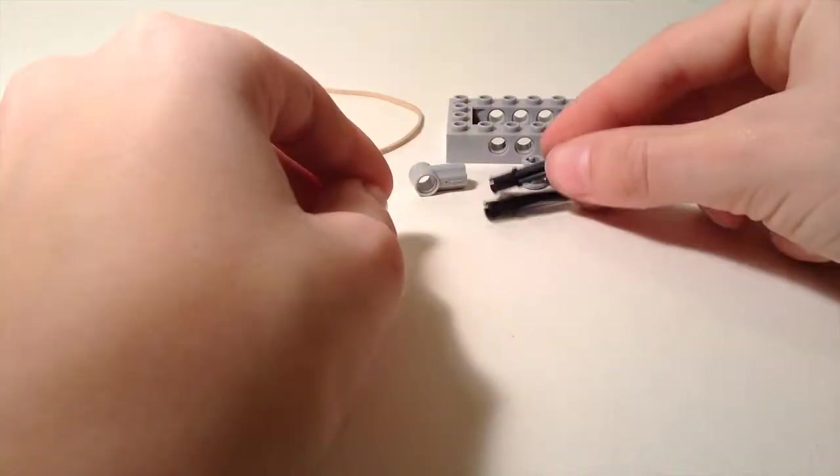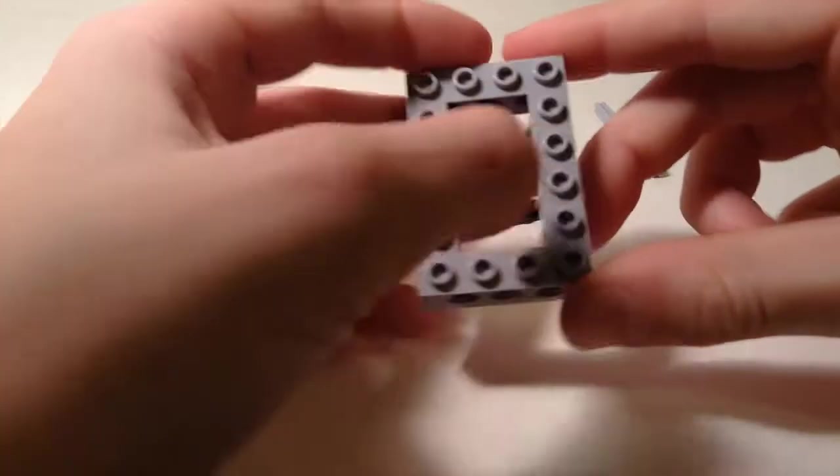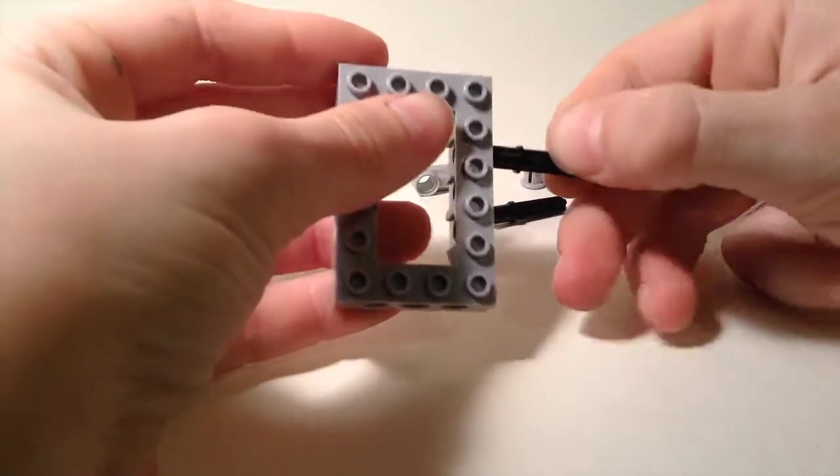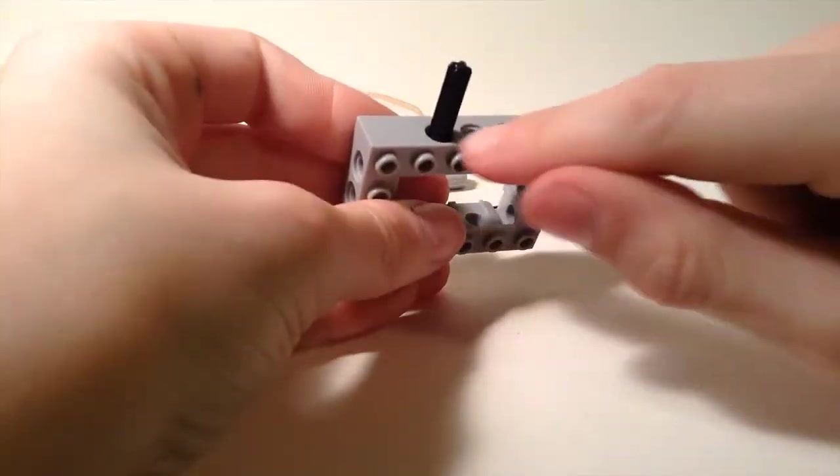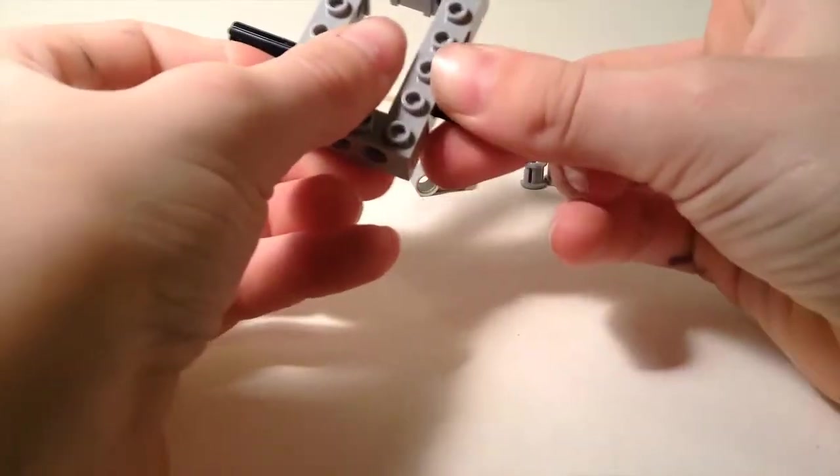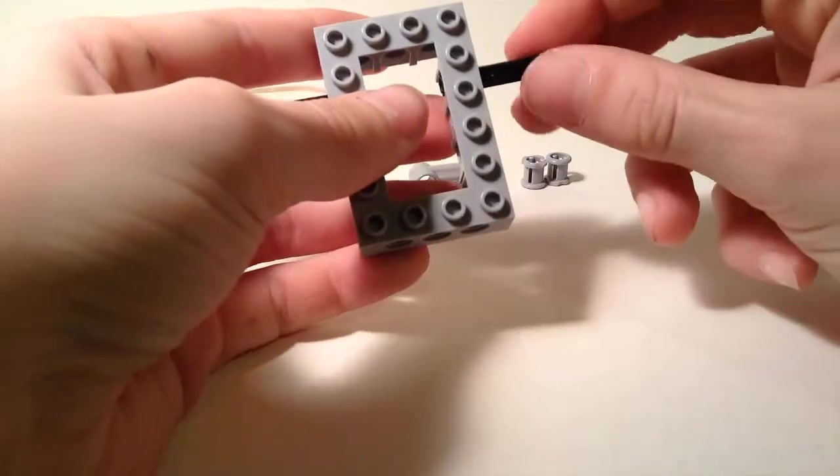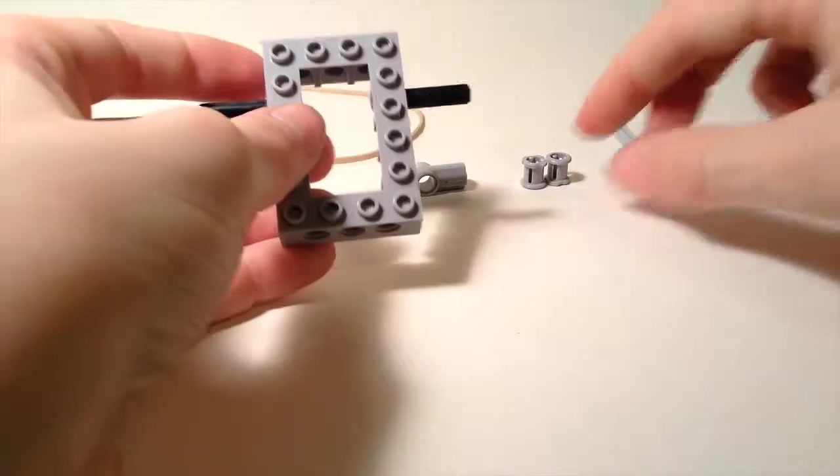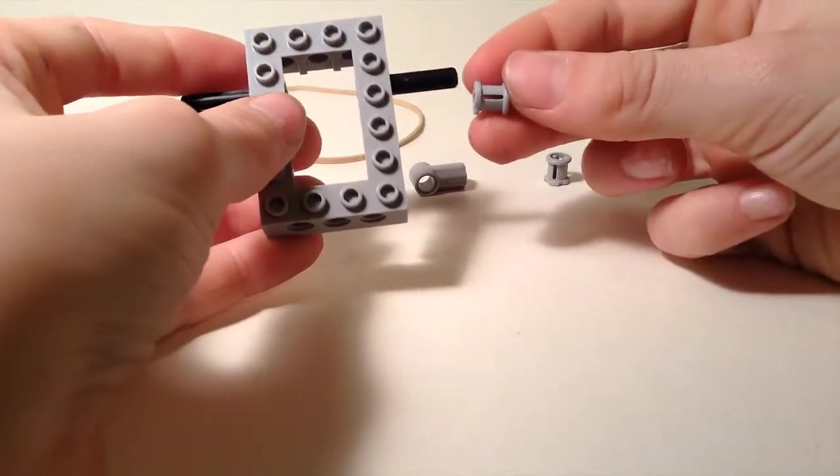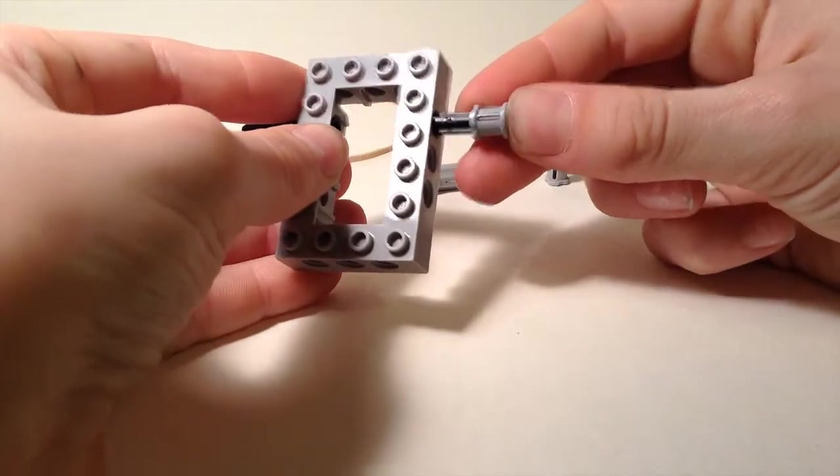To start, you're going to take your four by six brick piece and your black connector pieces and shove them in the side of the three holes on the top one like this. Turn them upright, then you're going to take your connector pins and slide them on the ends.